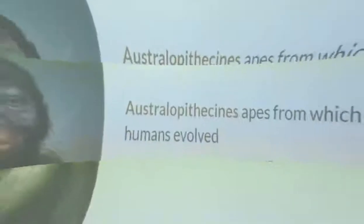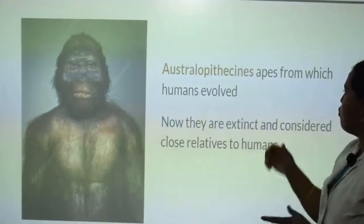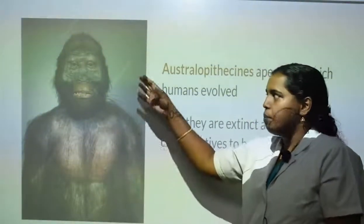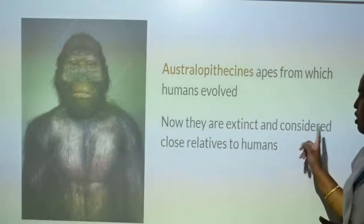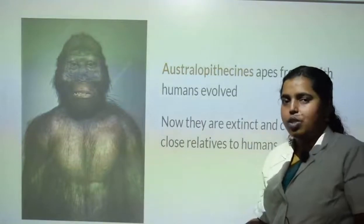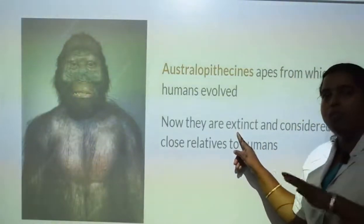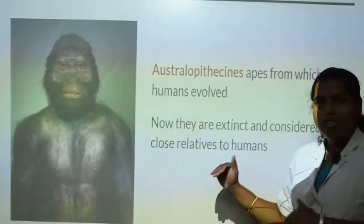In the next slide, you can see a picture of your forefather - Australopithecus, the apes from which humans evolved. Charles Darwin said that humans have evolved from the apes, because almost all the features of an ape resemble a human being, and DNA also resembles. So Charles Darwin noted that we have evolved from apes, and that study is called Australopithecus. They are now extinct and considered close relatives to human beings. Extinct means no more - you cannot see such apes now because we have come from them.